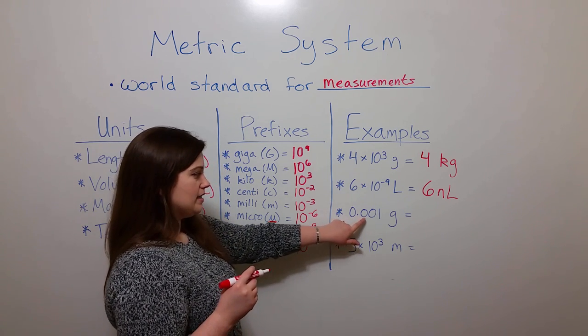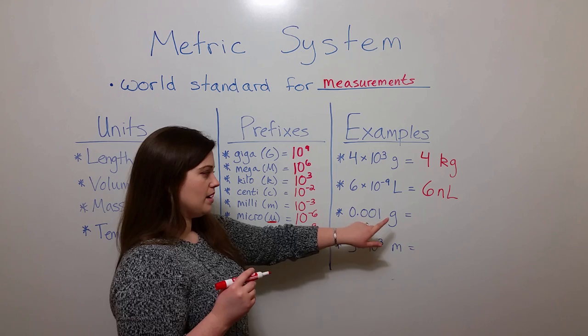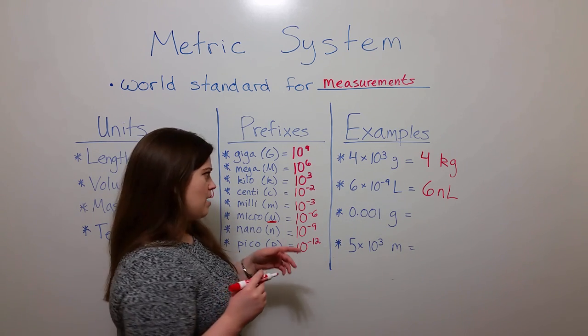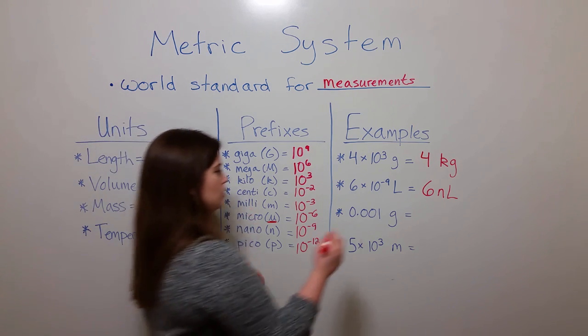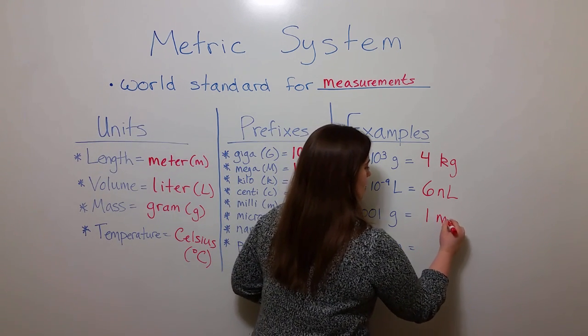Here, we have point zero zero one grams. This is the same as ten to the minus third. We see the prefix for that is milli. So this is one milligram.